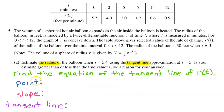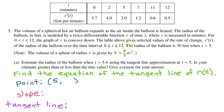Let's start with the point. The point will always be the point of tangency. When they say using the tangent line approximation at t equals 5, they are giving us the t coordinate of the point of tangency. So, it's going to be 5 comma something — this is t comma r. We just need the value of the radius at time t equals 5. The radius of the balloon is 30 feet when t equals 5, so the point is 5 comma 30.